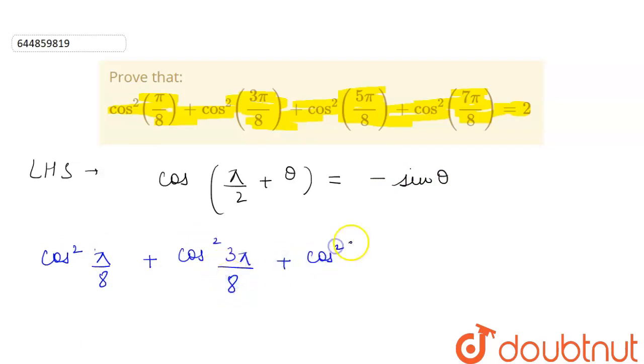Plus we can write this as cos square of, now we have to bring this in the form of pi by 2 plus theta. This will become pi by 2 plus pi by 8. We see that this will add up to become 5 pi by 8.